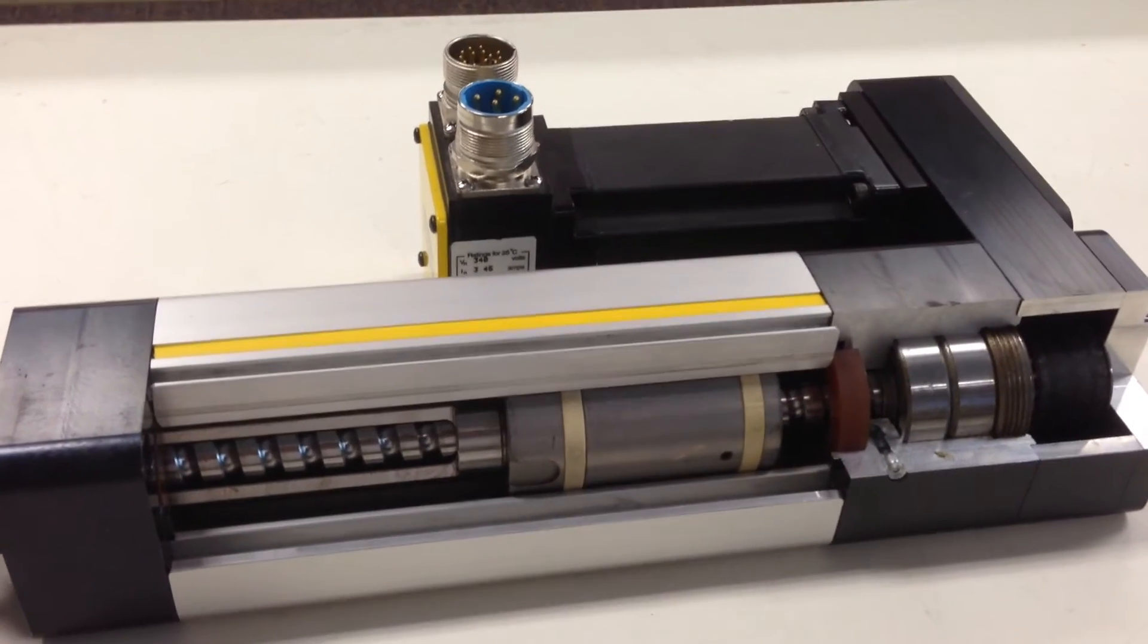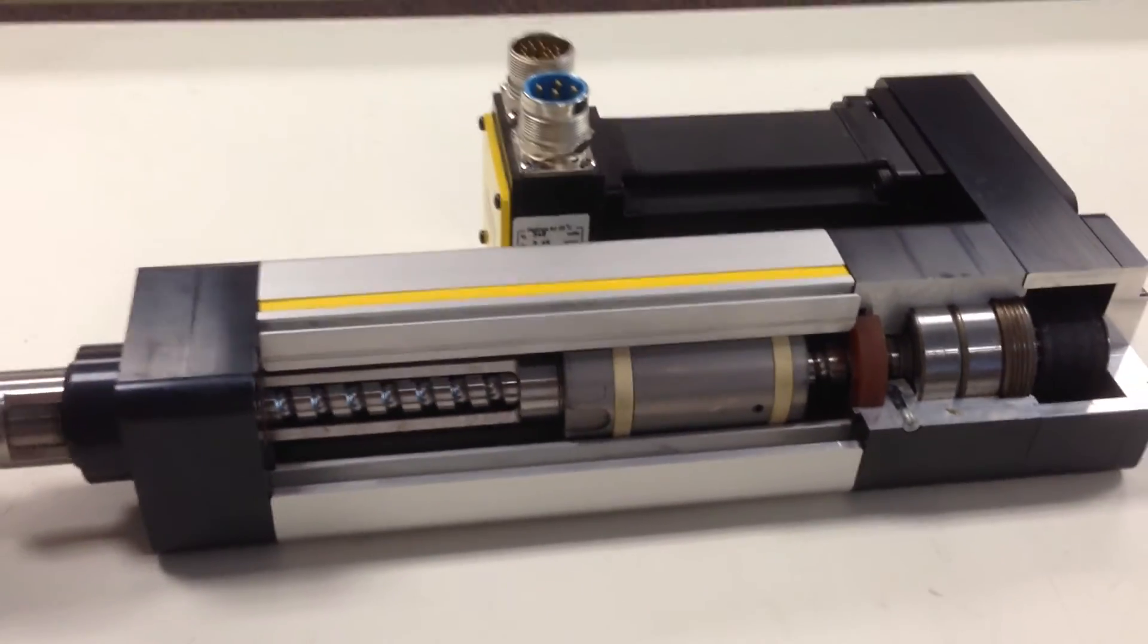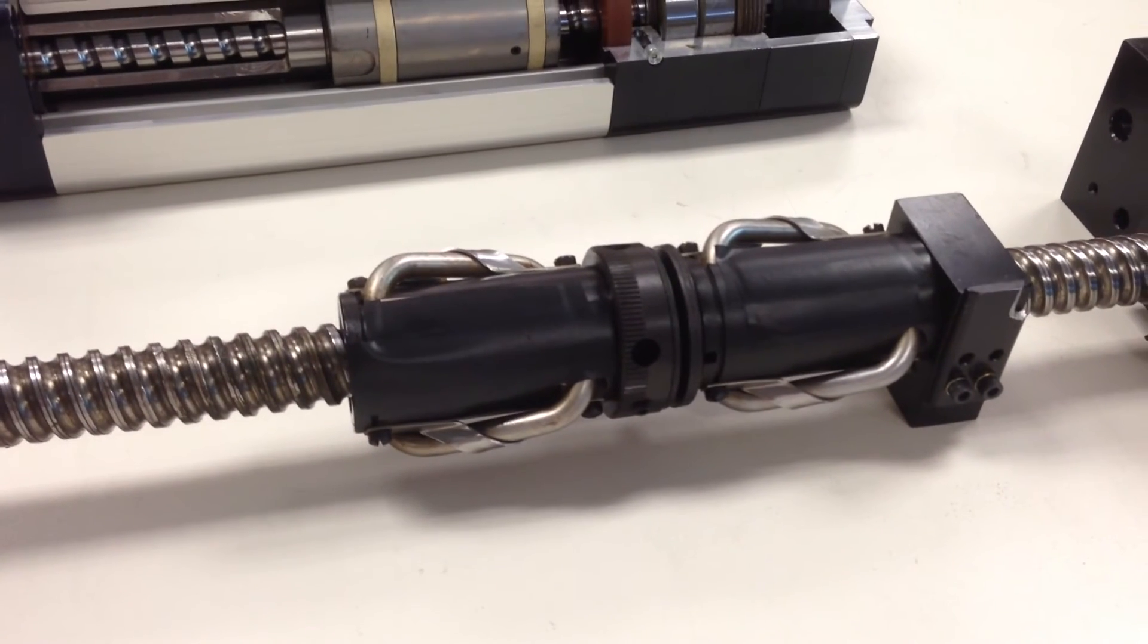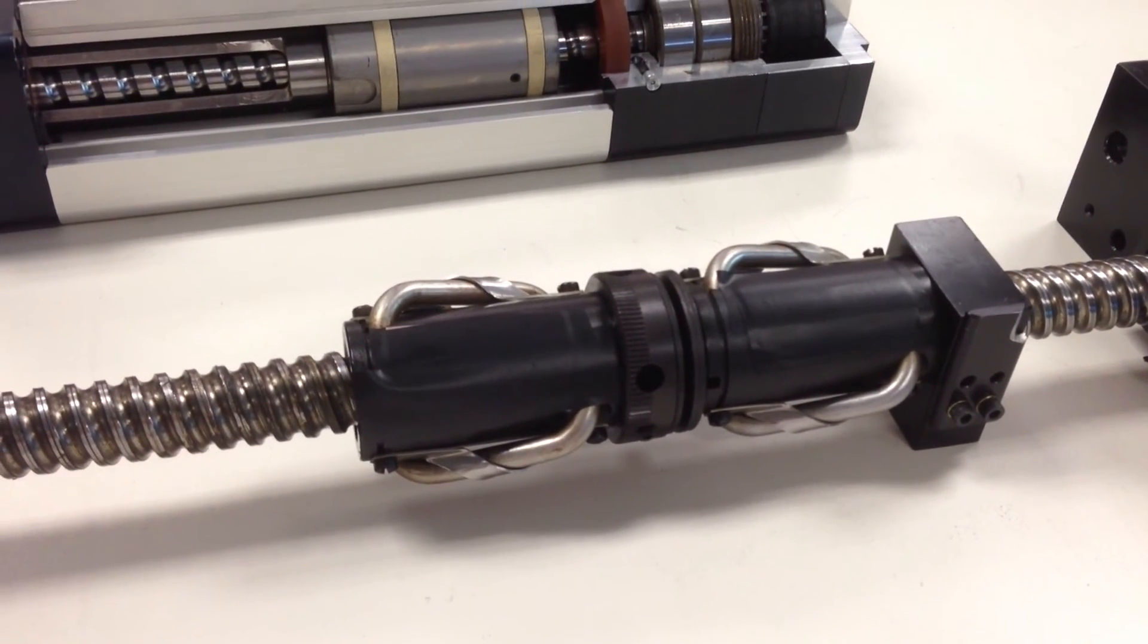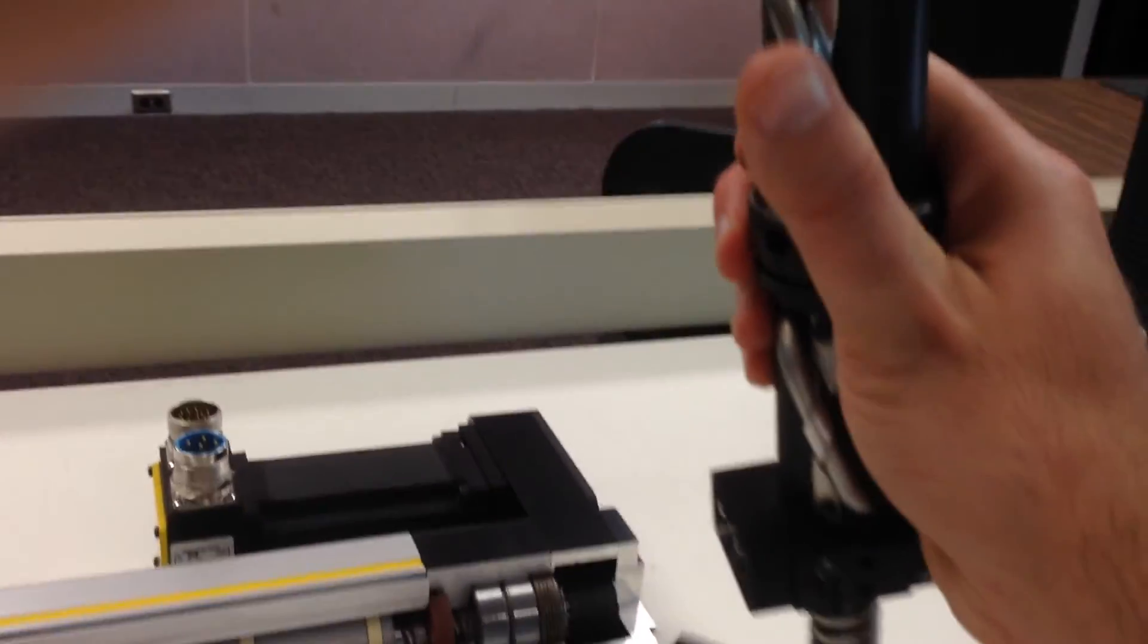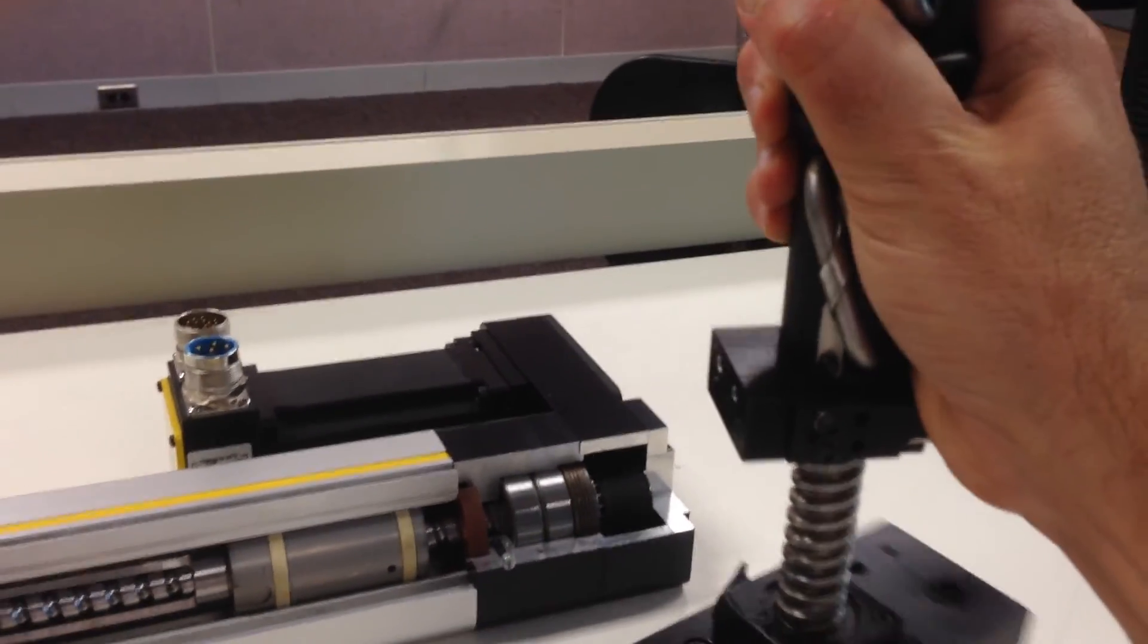Ball screws are very high efficiency, over 90% efficient, so you have very low losses. If I take the ball screw, I can actually prop it up on end and you can see it's very easy to back drive.